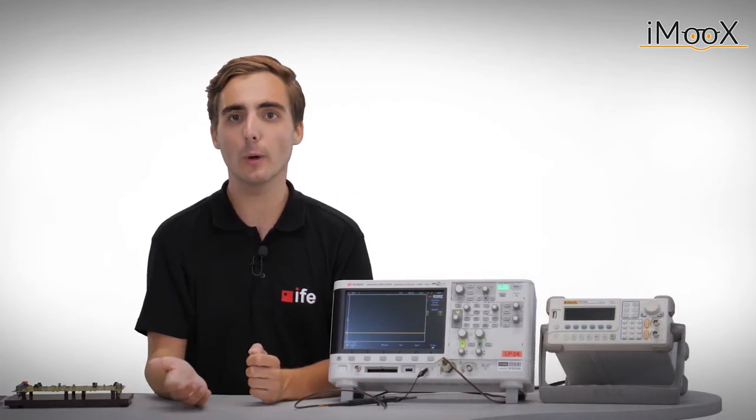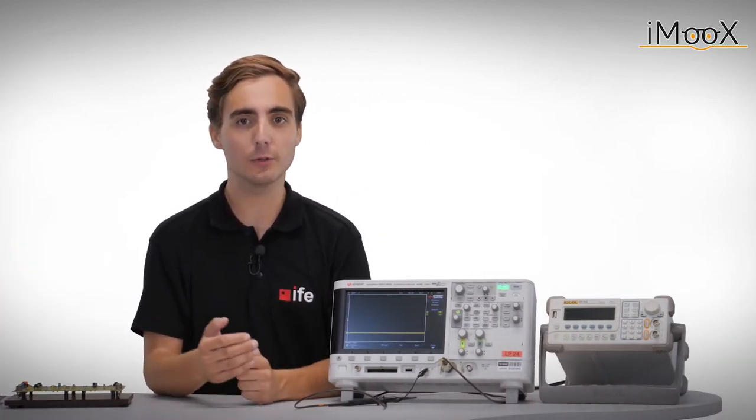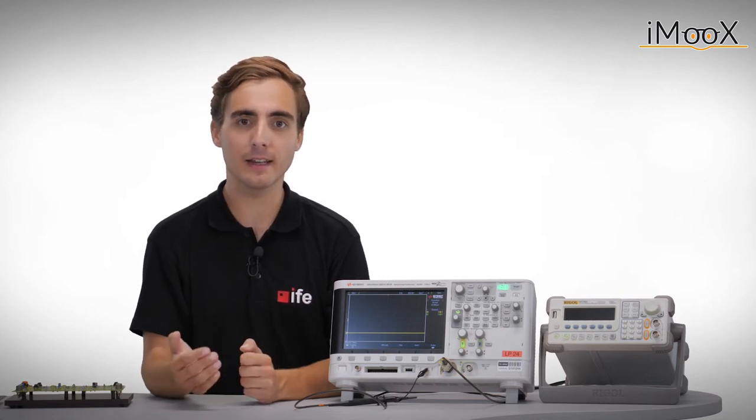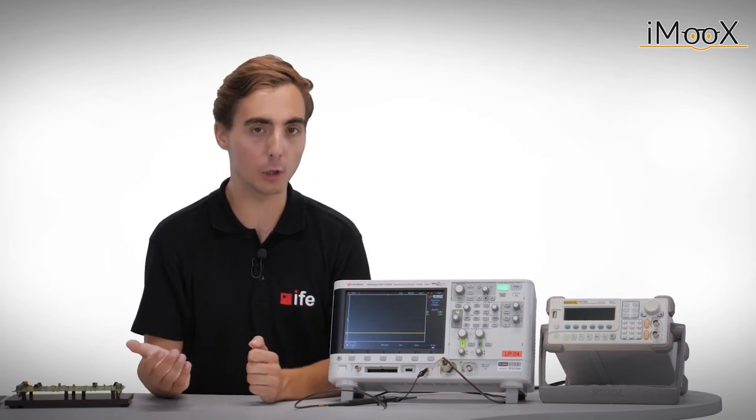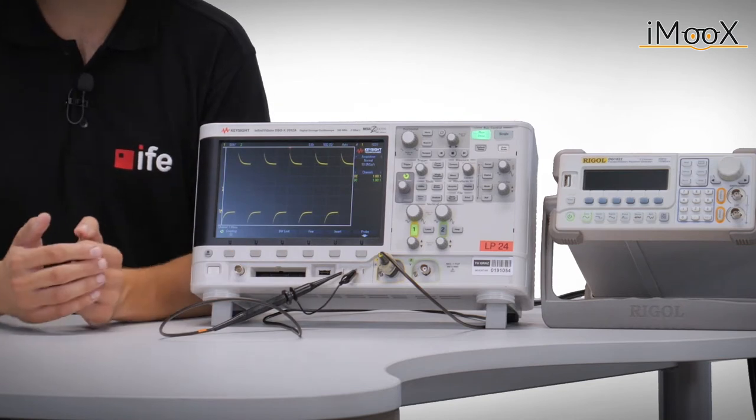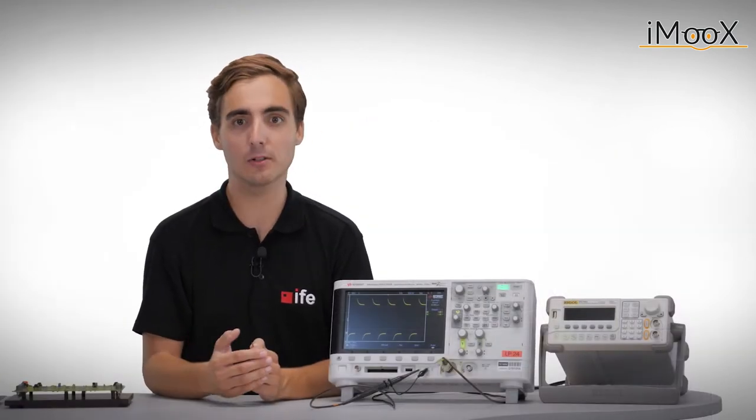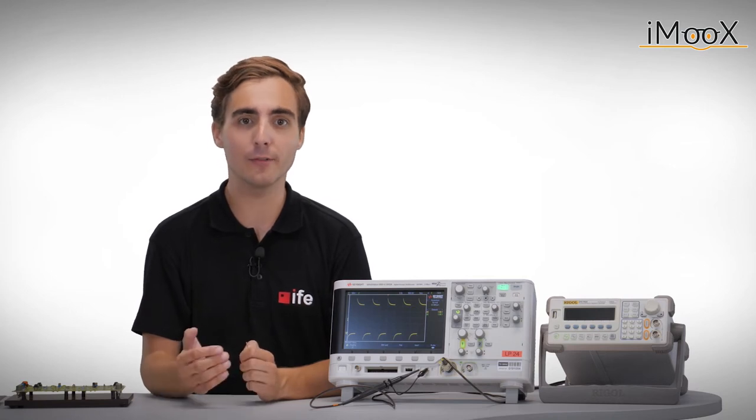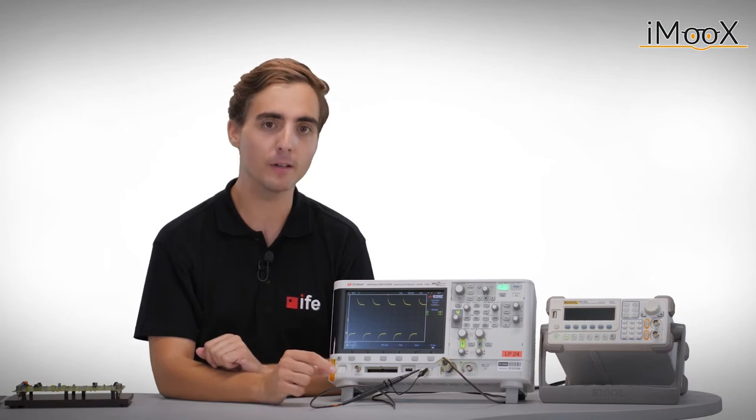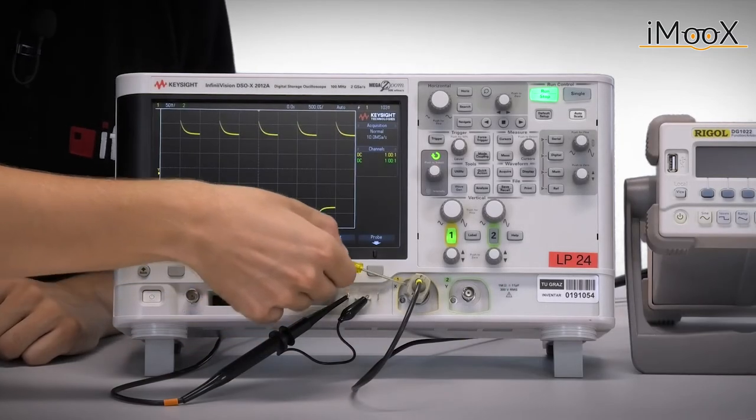A simple way to calibrate this compensation capacitor is to use the scope and a rectangular signal. In this case, we will use the demo signal that is already provided by most scopes. We can see that the rectangular signal does not appear to be rectangular. Therefore, the compensation capacitance has to be adjusted by using a screwdriver until a rectangular signal is visible.